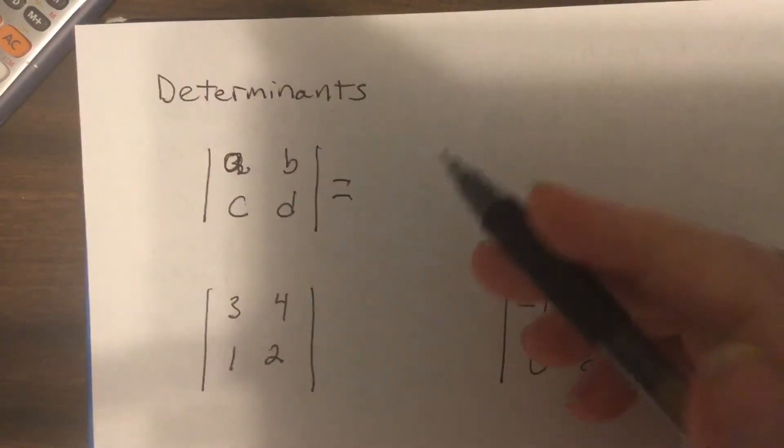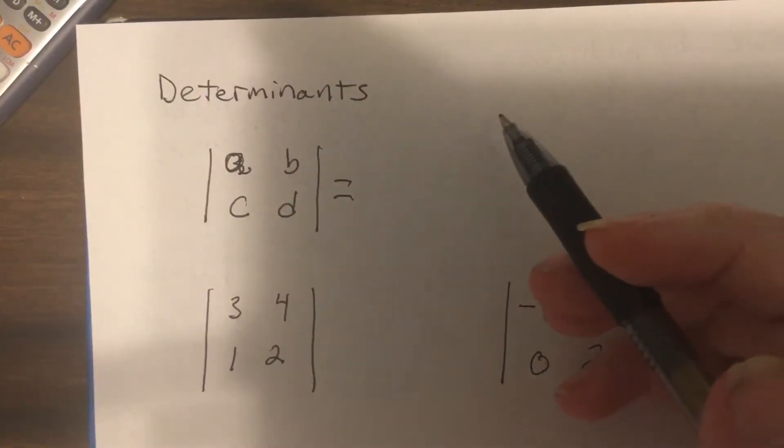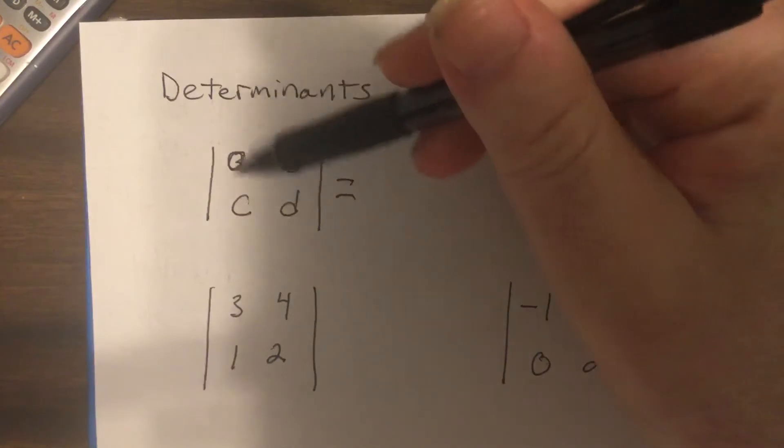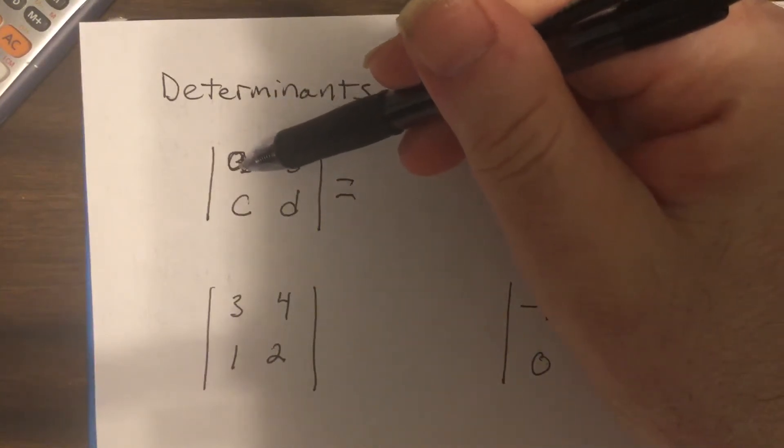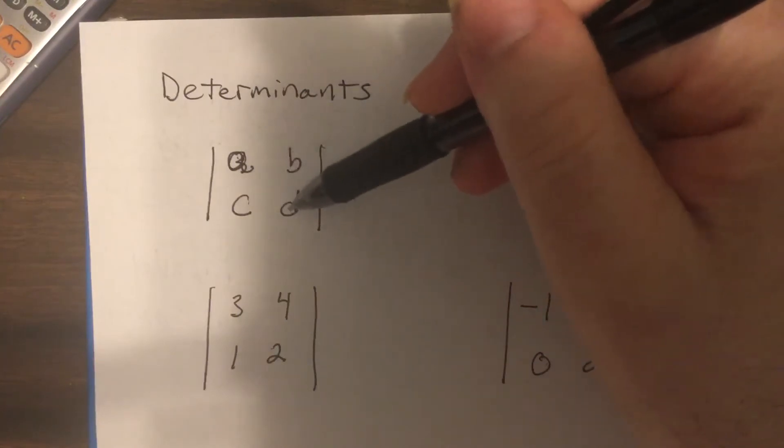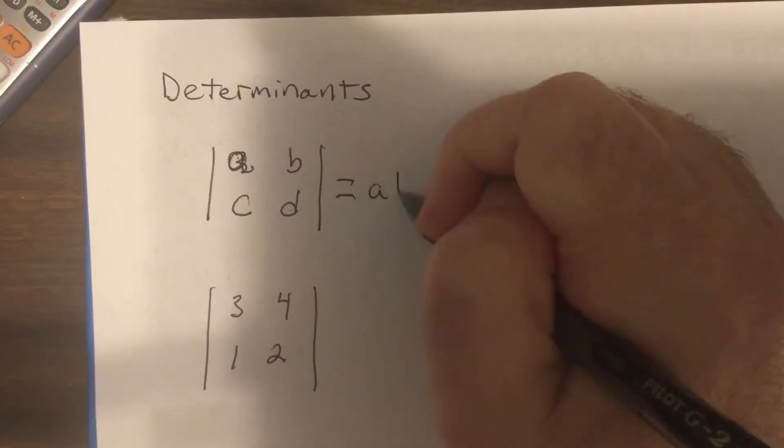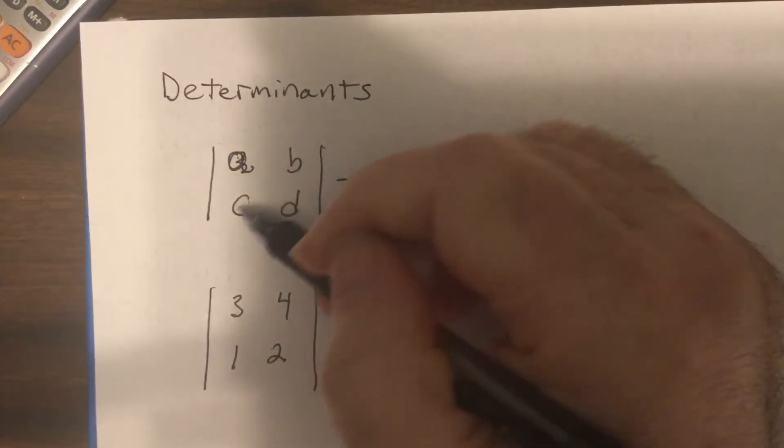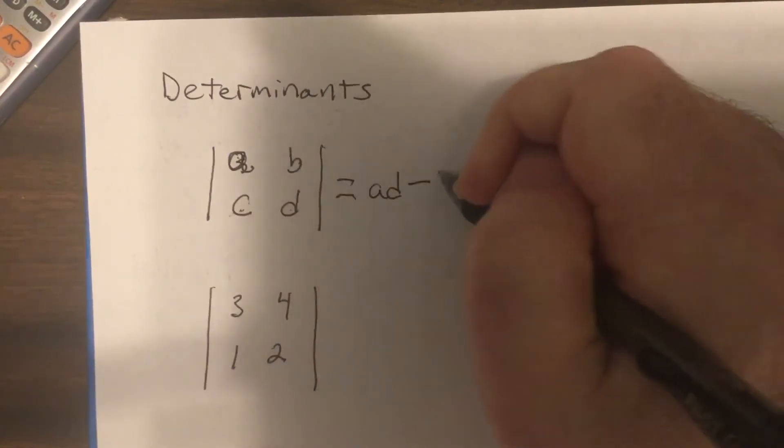So first we have to define what a determinant is because we're going to use it. A determinant for 2 by 2 is A times D, you start upper left, multiply to the diagonal, minus the other diagonal, B times C.